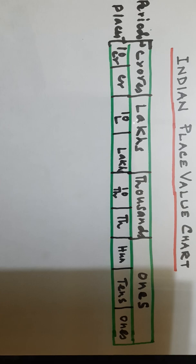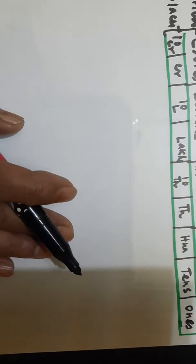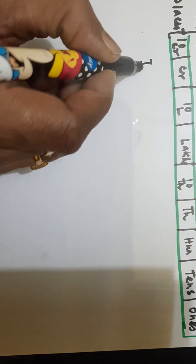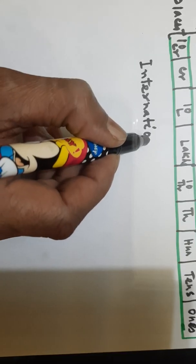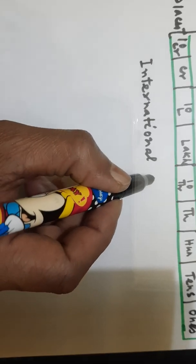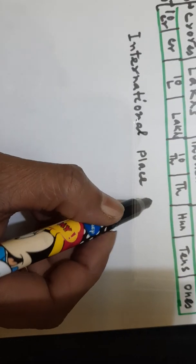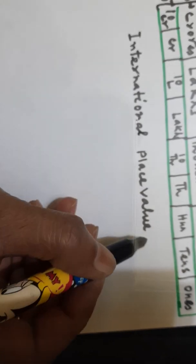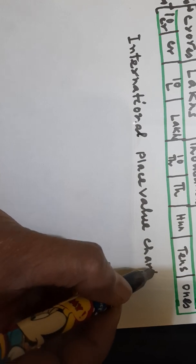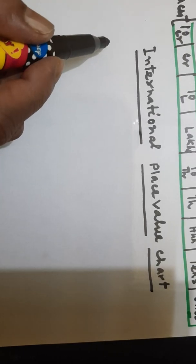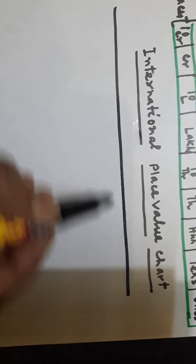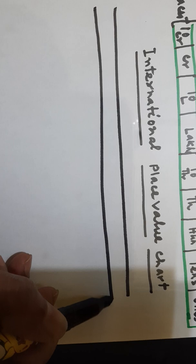Now I will show you the international place value chart and you can find the difference. You have to draw these lines to show the periods and places.